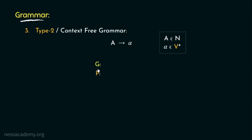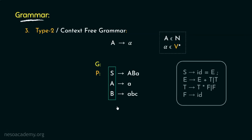Consider an example: suppose we have a context free grammar G with the following production rules — S can be rewritten as AB followed by lowercase a; A can be rewritten as lowercase a; and B can be rewritten as lowercase abc. Observe the left hand sides of the production rules — all of these have only a single non-terminal. If we recall the grammar used to construct the parse tree during the syntax analysis phase, there also the left hand side had only one non-terminal in every production rule. So any grammar having all its production rules of the form A → alpha is called type 2 or context free grammar.